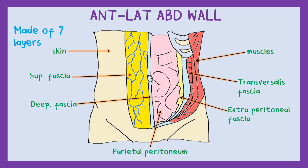Have a look — the outermost thing on your belly or abdomen is the skin. Then we have the superficial fascia, the deep fascia, then the muscles: the external oblique, the internal oblique, and the transverse abdominis. And if we look beneath the muscles, we find another fascia — the transversalis fascia — and another fascia, the fascia of the extraperitoneum. Our abdominal wall is just full of fascia and muscles arranged in a specific order.